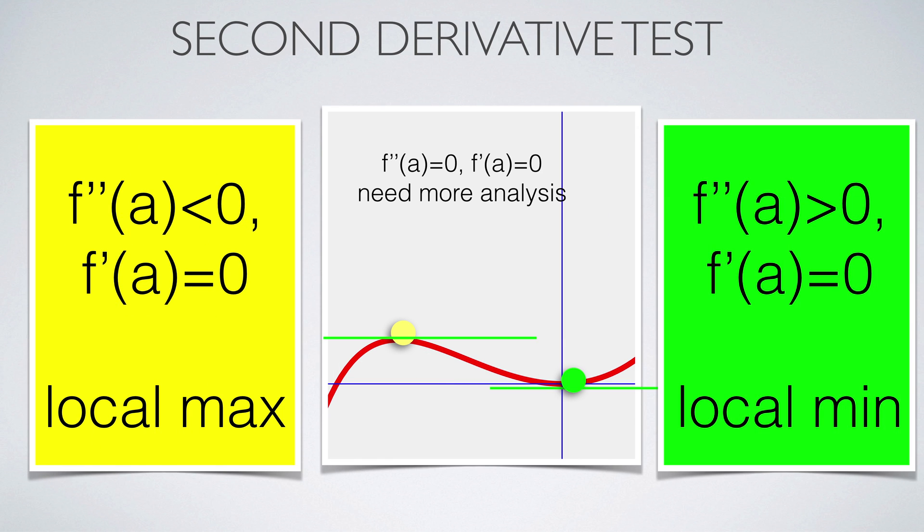If the second derivative at a critical point is negative, then the function is concave down there and the function has a local maximum. Similarly, if the second derivative is positive at a critical point, then we get a local minimum. If the second derivative is 0, the point is an inflection point. If this happens at a critical point, we don't necessarily have a maximum. An example is f(x) = x³ which has a critical point at 0 but neither a maximum nor a minimum.